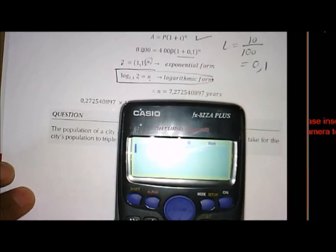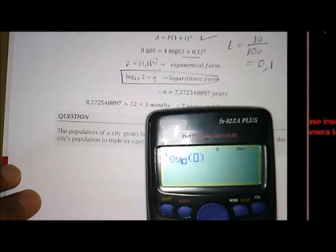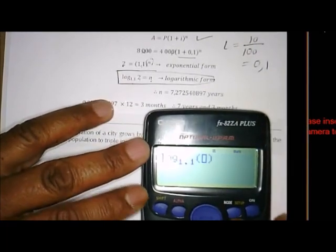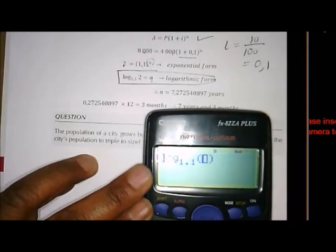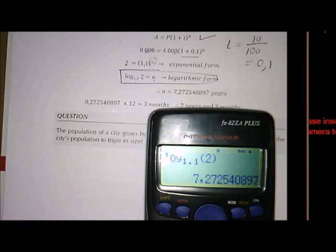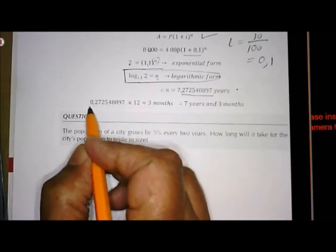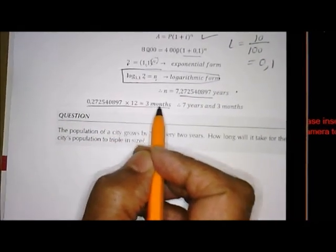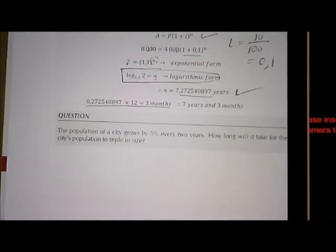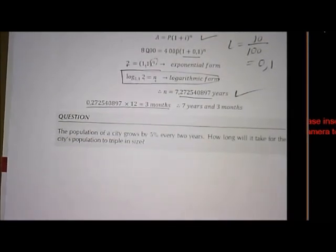So I am going to use this key. Okay, so what is the base? 1.1. There is your base. Scroll. And what is the number? The number is 2. Equals. And there we get it: 7.272 years. And of course the decimal part you can convert to months by multiplying by 12, and you get approximately 3 months. And there is your answer. So there is an example of how we are going to use logs in financial maths. In the next video I will show you how to use it in our inverse functions. Thank you, bye bye.